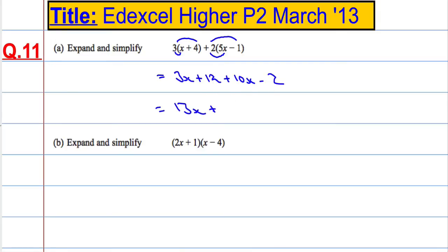Part B: expand and simplify 2x plus 1 times x minus 4. Well, that's going to equal the 2x times all of this.